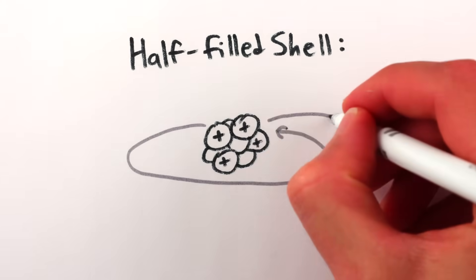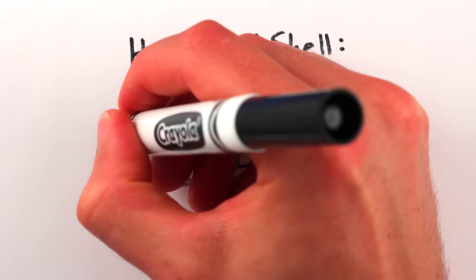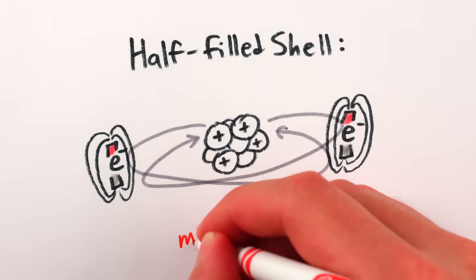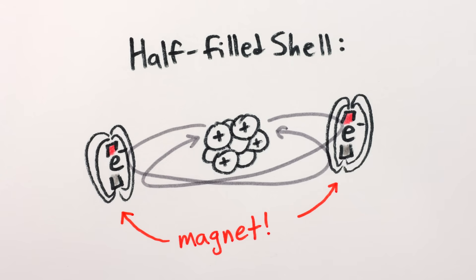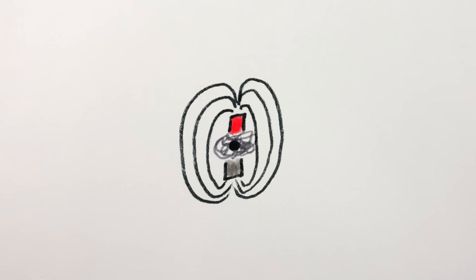These electrons also come in pairs whose tiny magnets point in opposite directions and also cancel. However, in a half-filled shell, all of the electrons are unpaired, and their tiny magnets point in the same direction and add up, meaning that it's the intrinsic magnetism of the electrons in the outer shell that gives an atom the majority of its magnetic field.